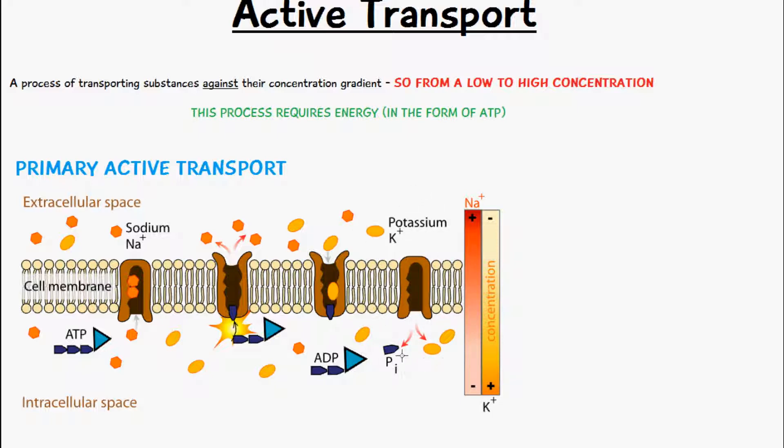The way this active transport mechanism works is we have three sodium ions, because this pump transports three sodium for two potassium. Three sodium ions come along and bind onto this pump. The inside of this pump attracts three sodium ions to bind. Because of its structure, it's almost like a magnet, attracting the sodium ions here.